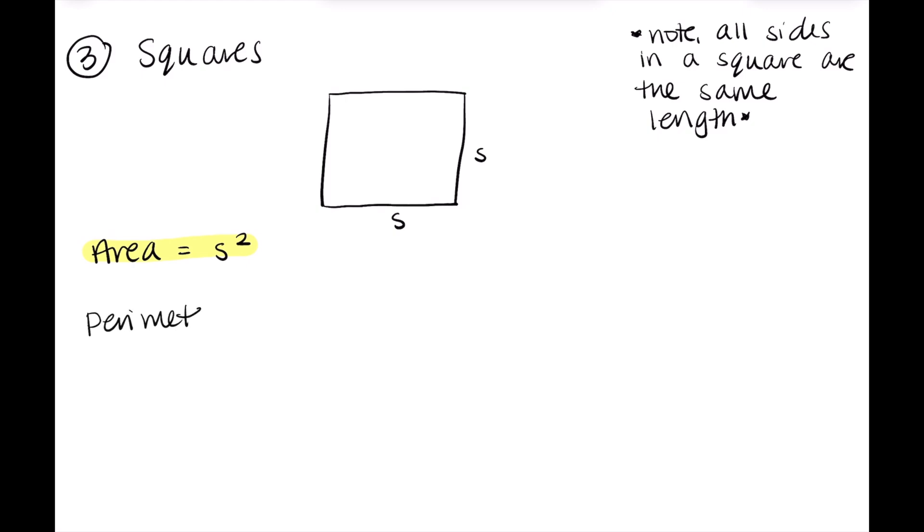Now for perimeter, it's adding all of the sides together. But remember, they are all the same length. So it would just be four times that side value, since there are four sides and they are all equal. So those are the two formulas for squares. Now that we've gone through the area and perimeter for all of our shapes, we'll get into our practice section for today.